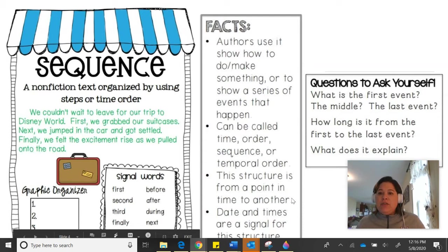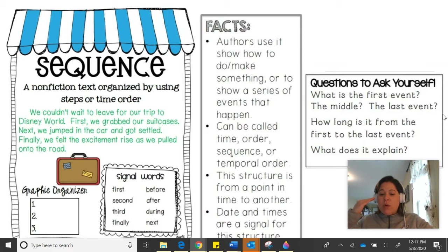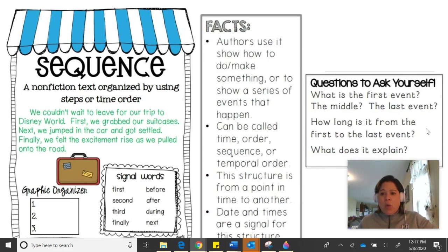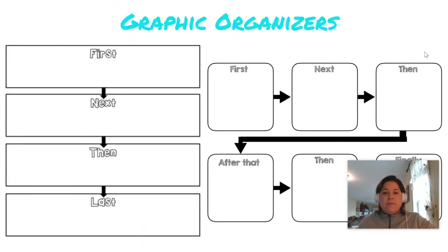When we read sequence text structure, here are some key questions to ask ourselves to make sure we're understanding what we read: What is the first event, the middle, and the last event? That helps us reorganize what we read in our brain. How long is it from the first event to the last event — how big of a time frame is the author focusing on? And what does it explain? It's also really helpful to use a graphic organizer.